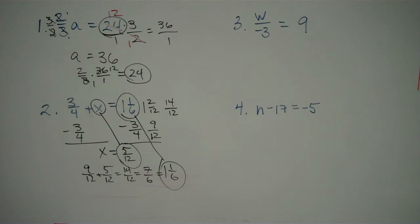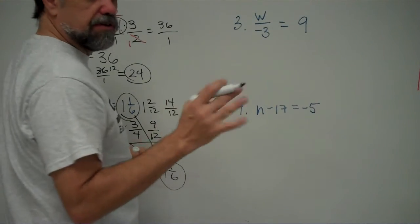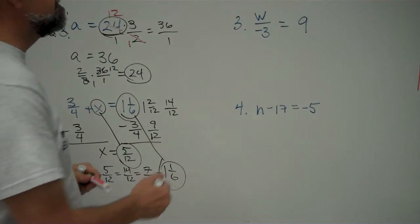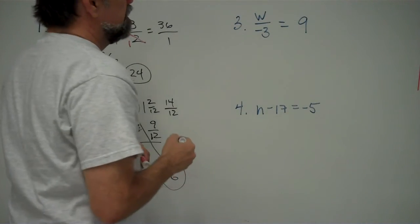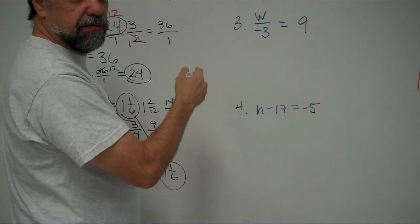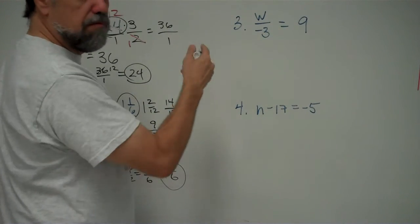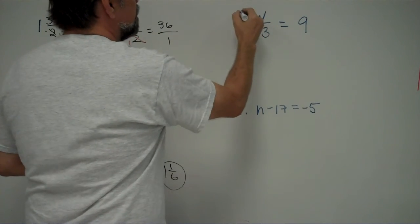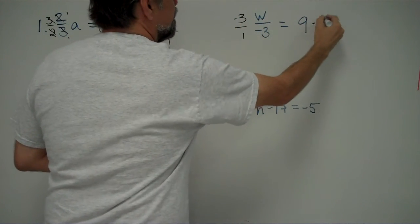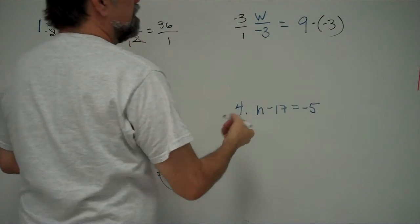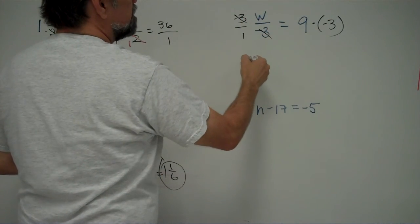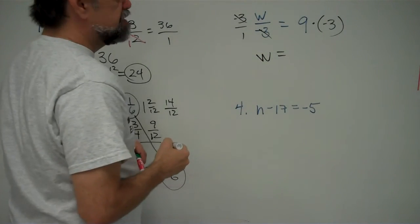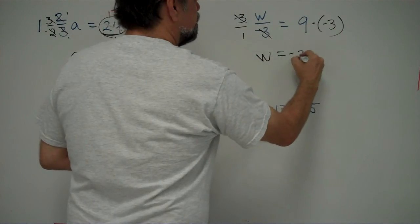Moving over to number 3, what's happening to my unknown? That's always the way you should start these problems. What's happening to the unknown? Well, in this case, what's happening to the unknown is it's being divided by negative 3. So, how do we solve this? We do the opposite. We do the inverse operation, which is you multiply times negative 3. So that means I'm going to multiply this by negative 3, and I'm going to multiply this times negative 3. Over on this side, I can simplify my fractions here, and I get w over 1, which is just w, equals 9 times negative 3 is negative 27.